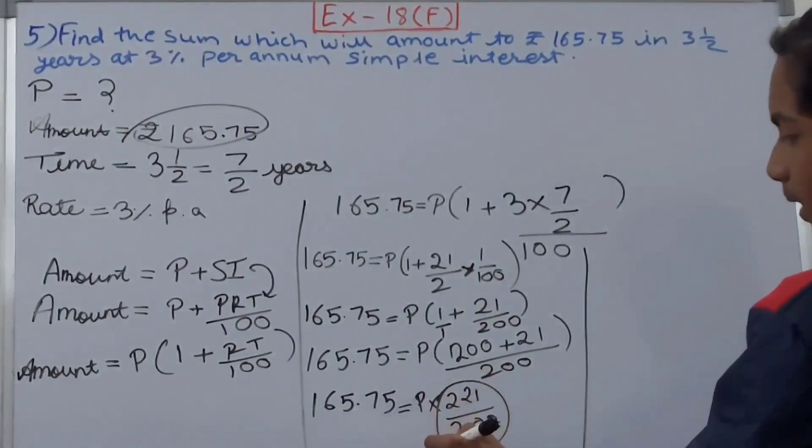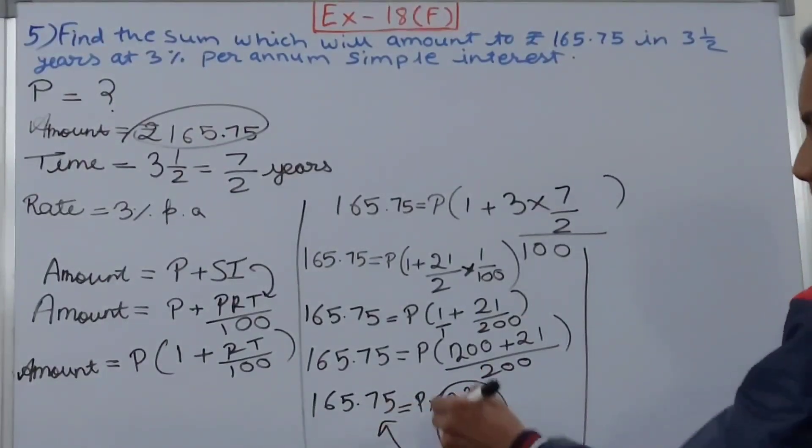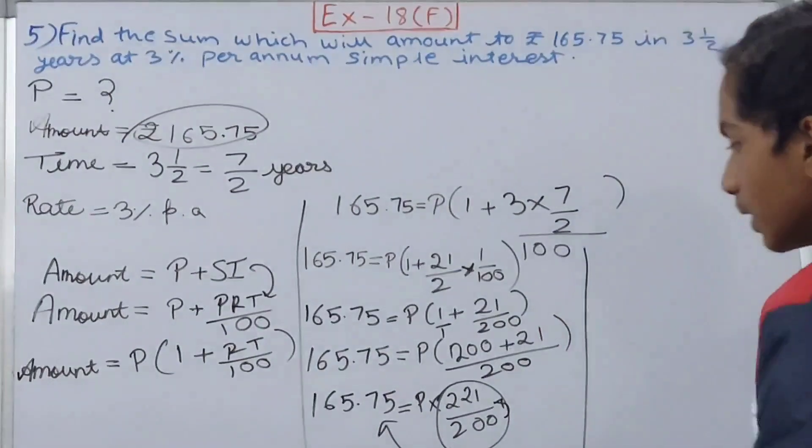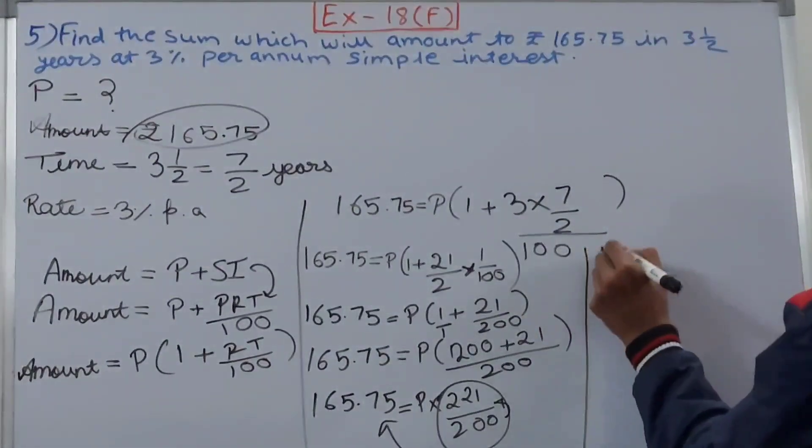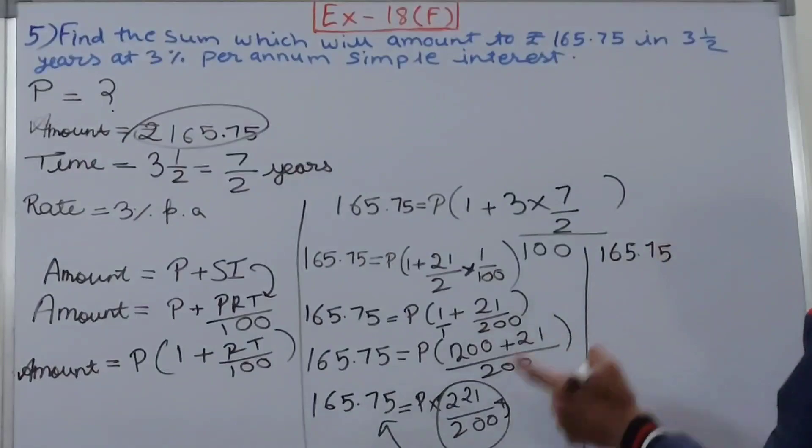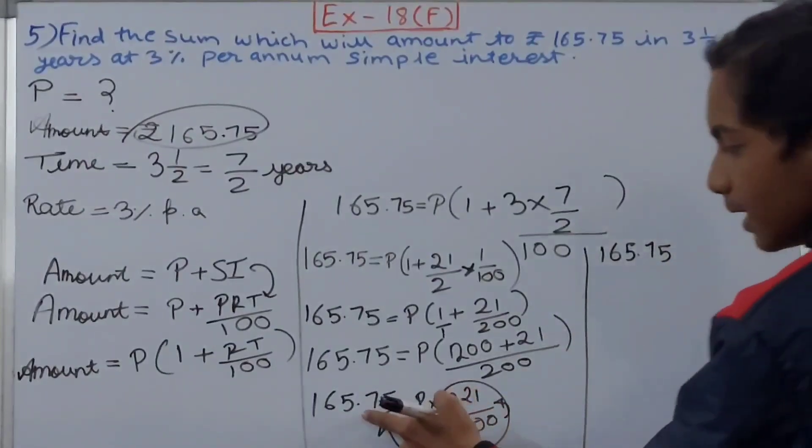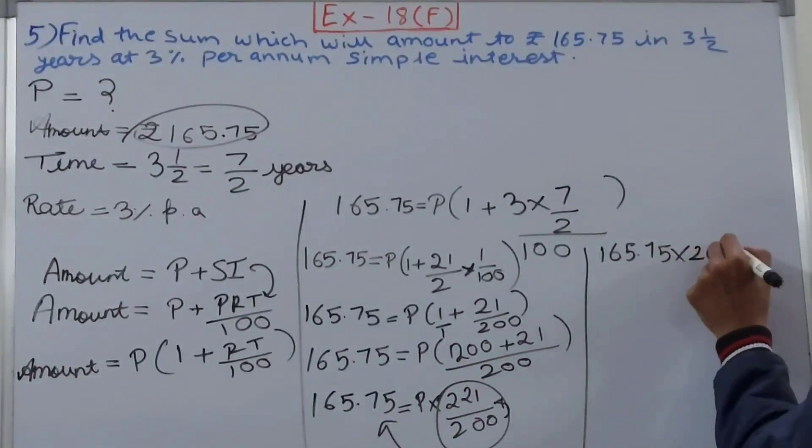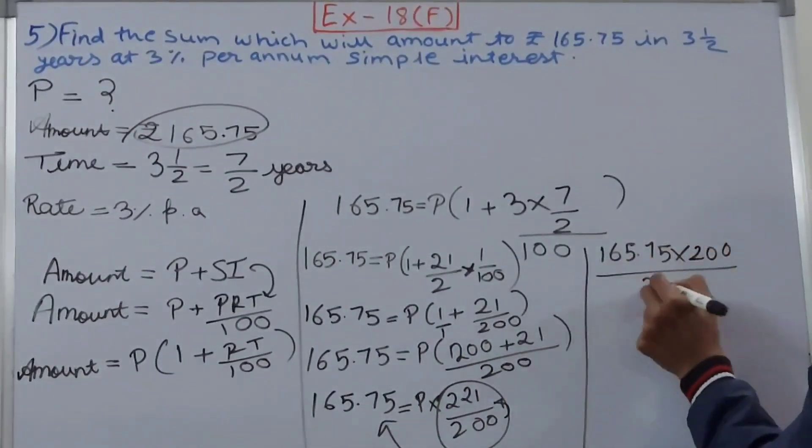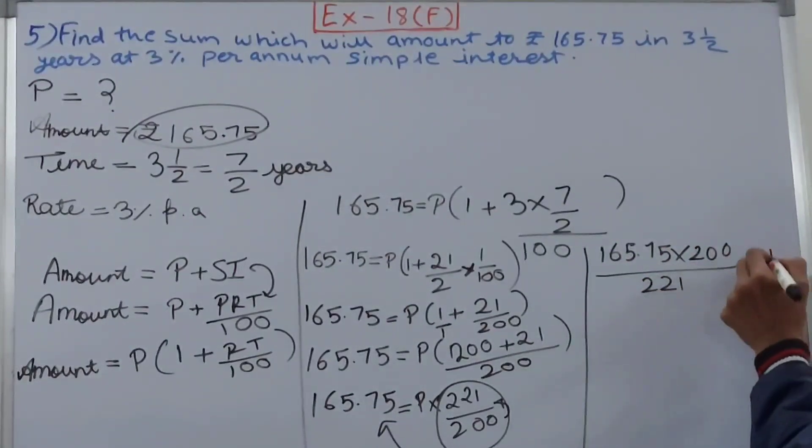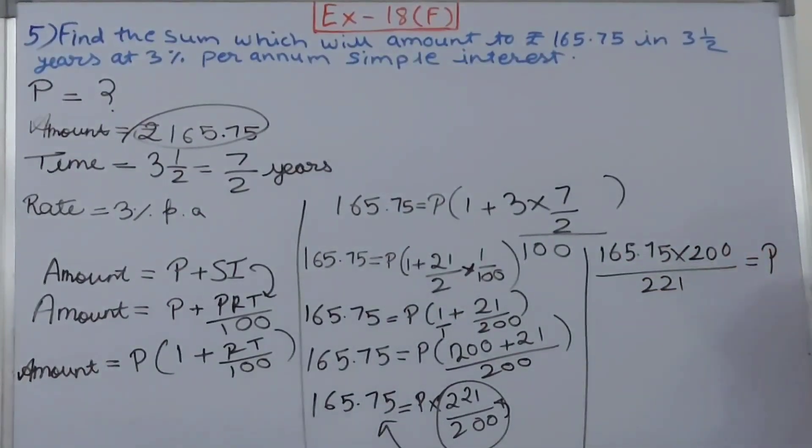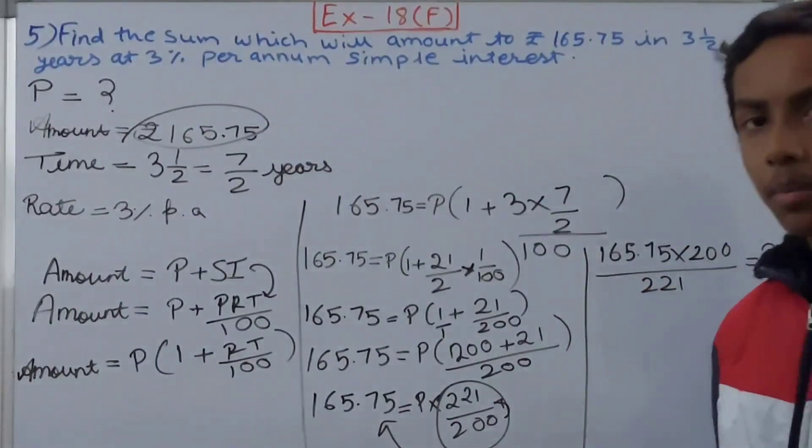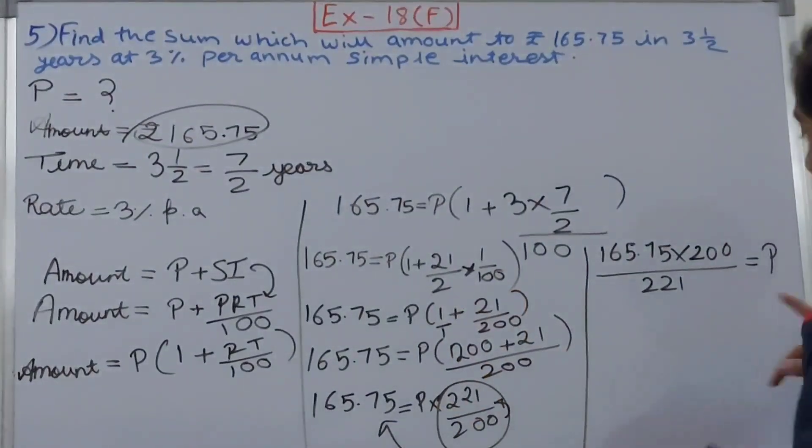Next, this entire thing will come to this side and it will be reciprocated - numerator becomes denominator, denominator becomes numerator. So this becomes 165.75 times 200/221 equals principle. Solving this will give us our principle sum or the answer.